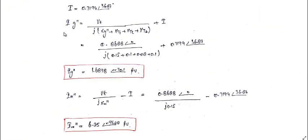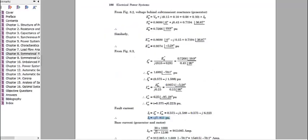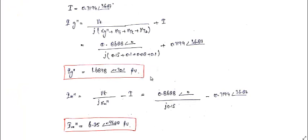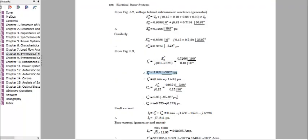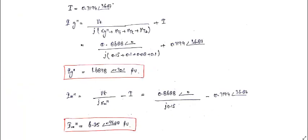From the Thevenin circuit, Ig double dash = Vt/0.43 + I = 1.689 at angle minus 70.1 degrees, which matches the earlier result exactly. Similarly Im double dash = Vt/(jXm double dash) minus I comes out to 6.25 at angle minus 95.2 degrees — also matching. So the Thevenin approach gives the same answers, confirming the method.